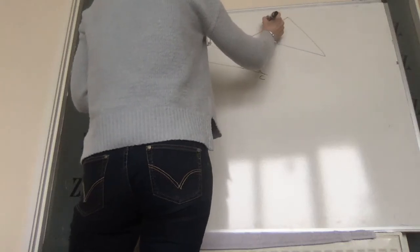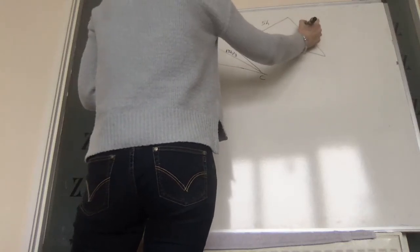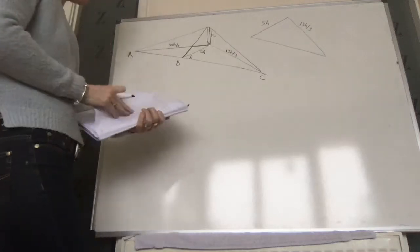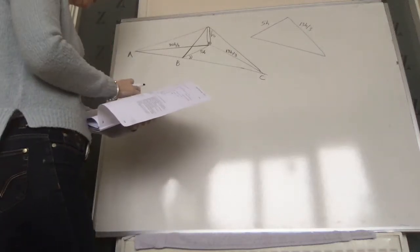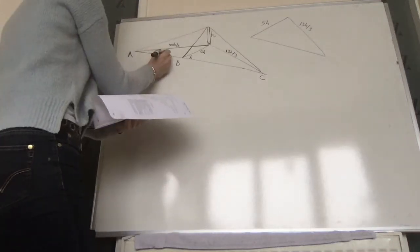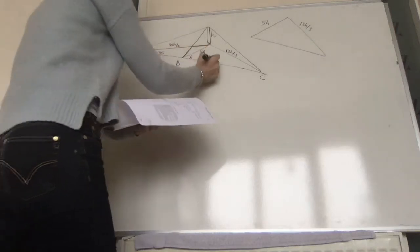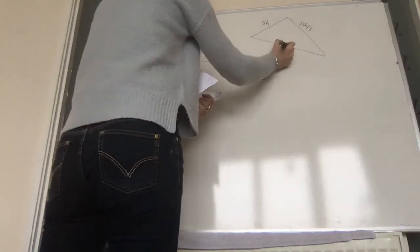We have a 5h, we have a 13h over 3, and we are actually given those two lengths as well. AB is 35 and the other one is 70, so we know that that's 70.